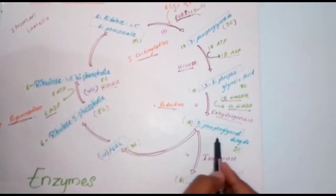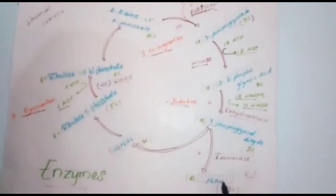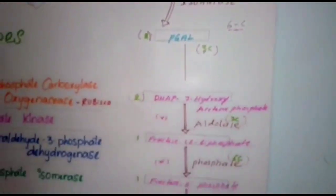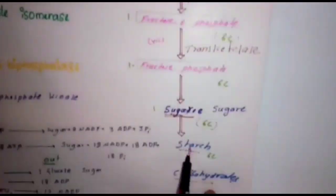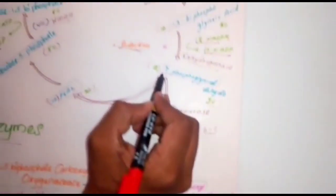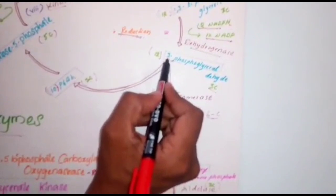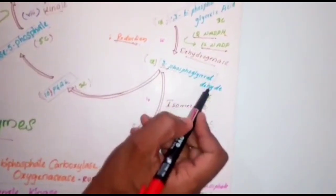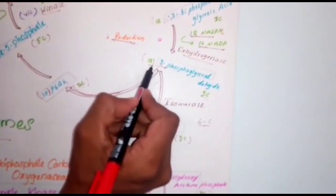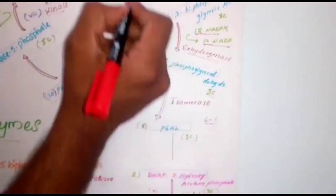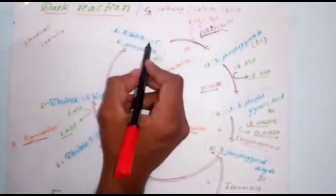This 3-phosphoglyceraldehyde is going to lead to the formation of sugar, starch, and carbohydrates. If you can see here, total 12 moles of 3-phosphoglyceraldehyde are present. Let us see very briefly how this is so.